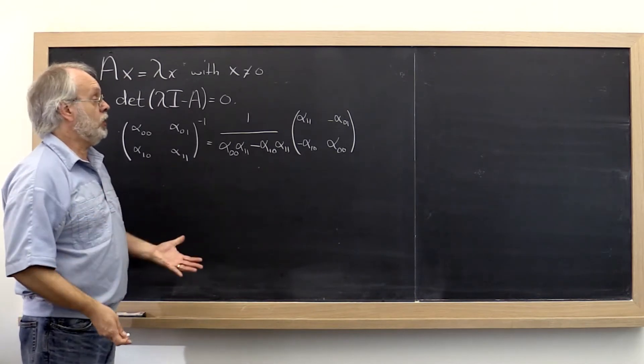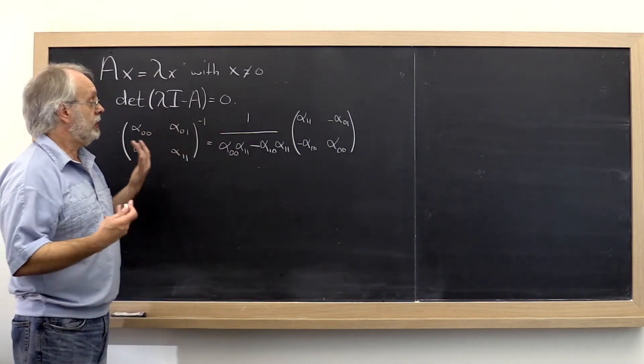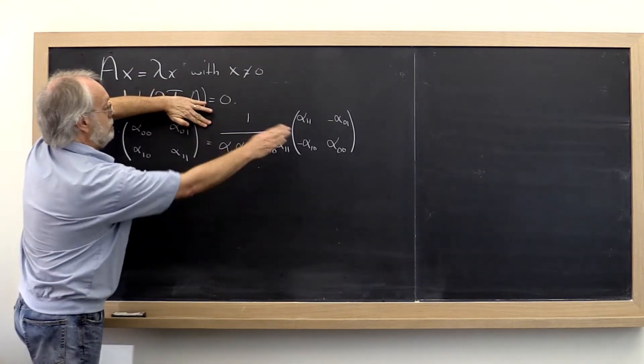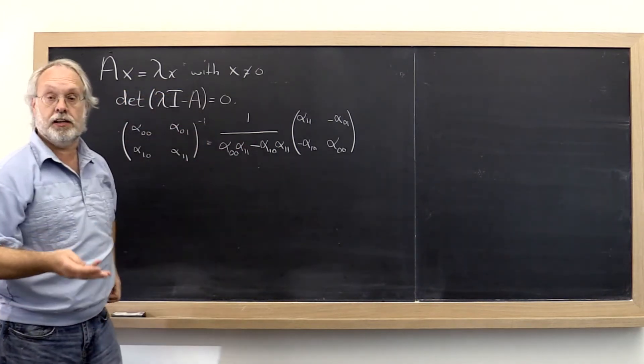And in the homework you were asked to verify this. And the way you verify this is you simply multiply this matrix times that matrix and you find out that you end up with the identity.